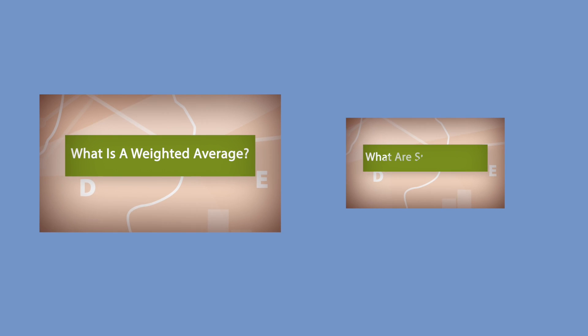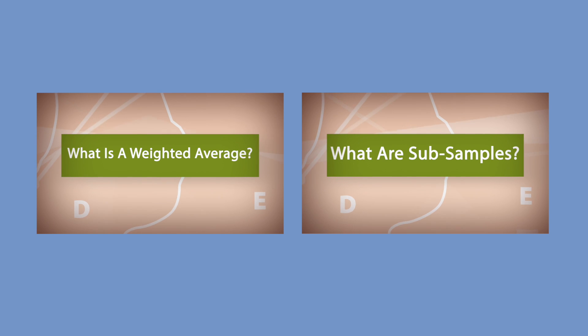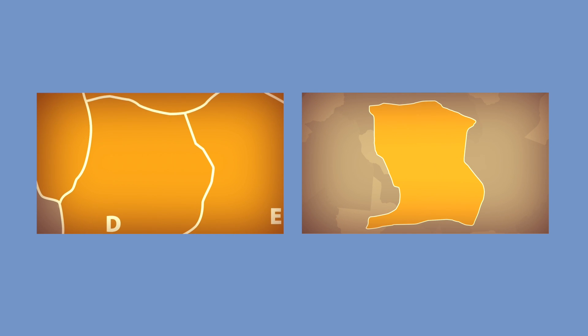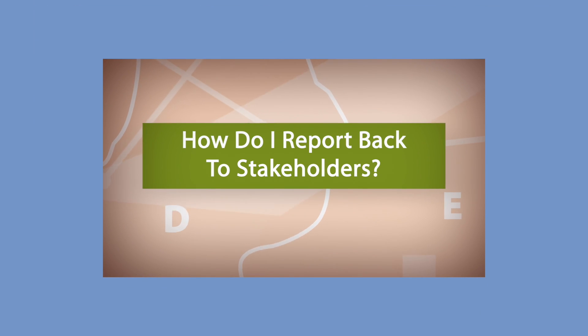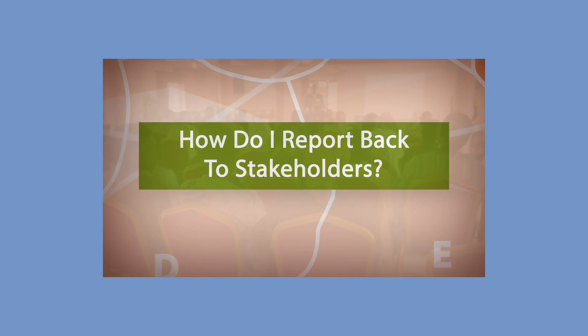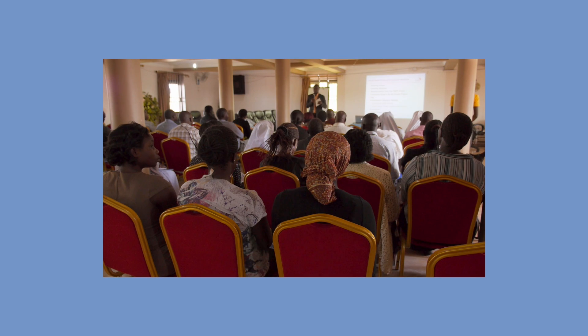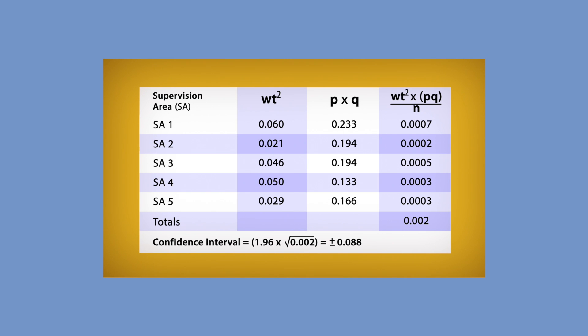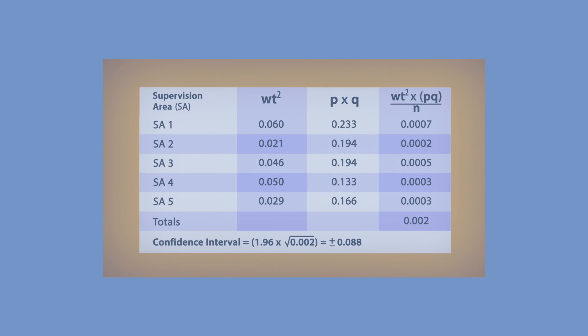The next two chapters are designed for people who will be analyzing the data at the district or catchment area level. If this isn't relevant to you, you may want to skip ahead two chapters to the section titled 'How do I report back to stakeholders?' So next, we will be looking at weighted averages.